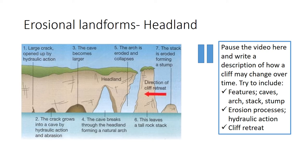If you pause the video here, try and write a description of how these cliffs change over time. Try to include the key features — caves, arch, stacks and stumps — but also name those key erosional processes as well, like hydraulic action. Have a look at the red arrow and see if you can understand this idea of cliff retreat, and include that in your description as well.